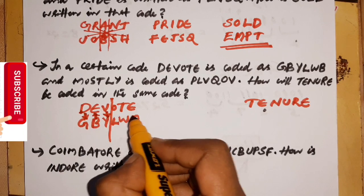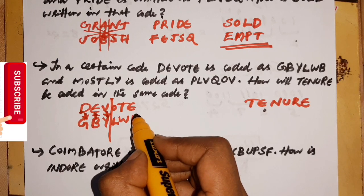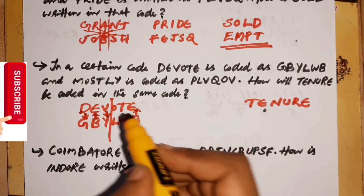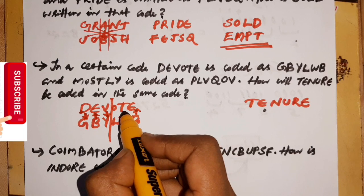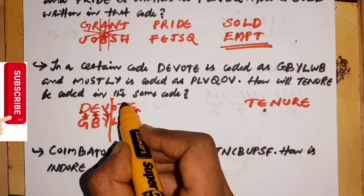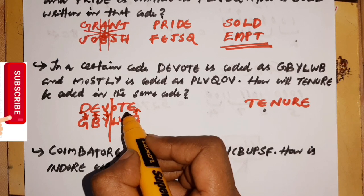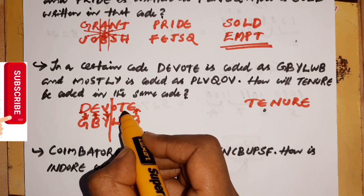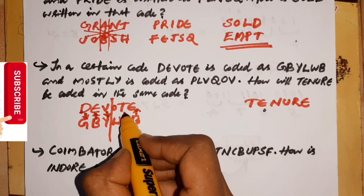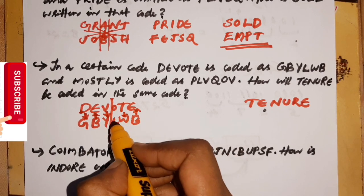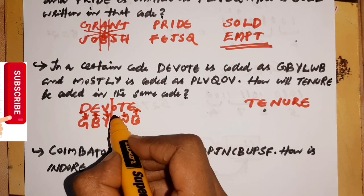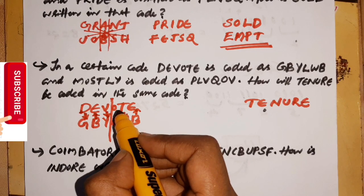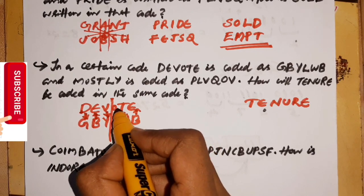This means B→C, D→E. This means T→W, meaning T plus U gives V→W. And L→O, meaning L→M→N→O.